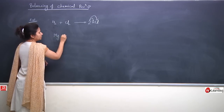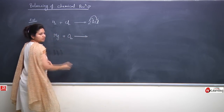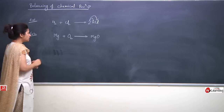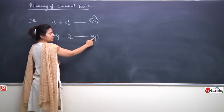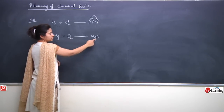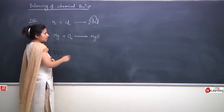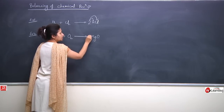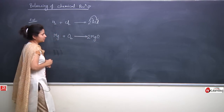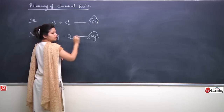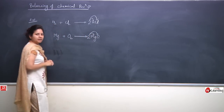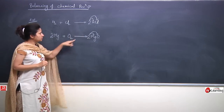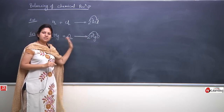Example 2: Mg + O2 → MgO. Magnesium is 1 on each side. Oxygen is 2 on the reactant side but only 1 on the product side. We need to make oxygen 2 on the product side — so we multiply MgO by 2 on the outside. Oxygen becomes 2, but simultaneously magnesium also doubles. So: 2Mg + O2 → 2MgO. Magnesium 2, oxygen 2 on both sides — this is a balanced chemical reaction.